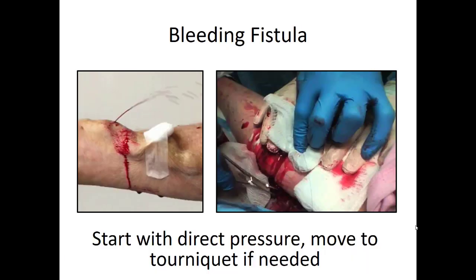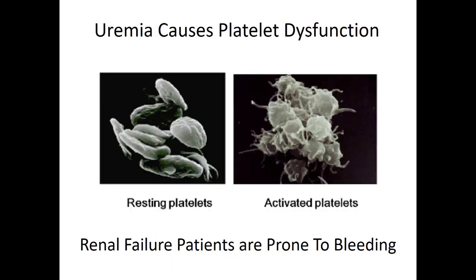Sometimes fistulas can bleed — this is not an uncommon emergency. Start with direct pressure. If that doesn't work, you can move to a tourniquet — just realize those are painful, so don't forget to treat pain. As a consequence of uremia buildup and dialysis, platelets in dialysis patients don't function normally. Normally a platelet activates and sticks out sticky extensions to form a fibrin clot, but in renal failure patients on dialysis they lose the ability to activate and stay slippery. So renal failure patients tend to bleed more easily than others.